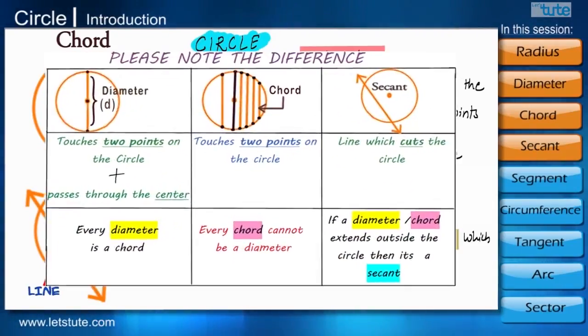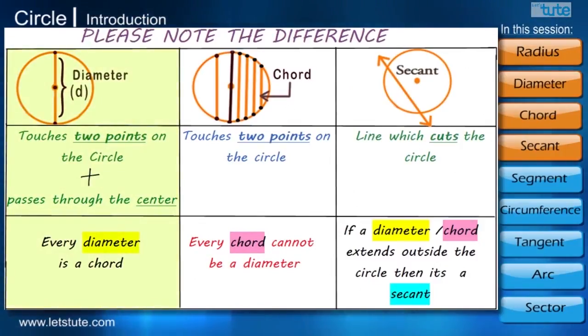Kindly note the difference between diameter, chord and a secant. Diameter is a chord which passes through the center whereas chord touches at any two points on the circle and secant is a line stretching to infinity at both directions.